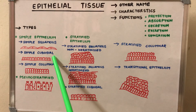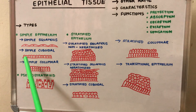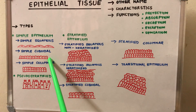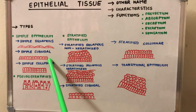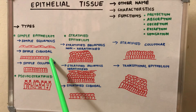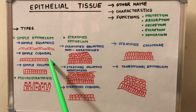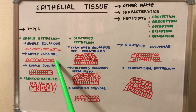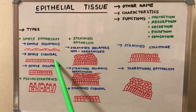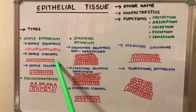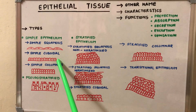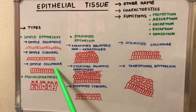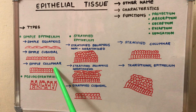The simple cuboidal epithelium is made of a single layer of cube-shaped cells. It is found in the ducts of various glands like the thyroid gland, the small ducts of the digestive glands, the germinal epithelium of the ovary, the retinal pigment epithelium, and the respiratory bronchioles.